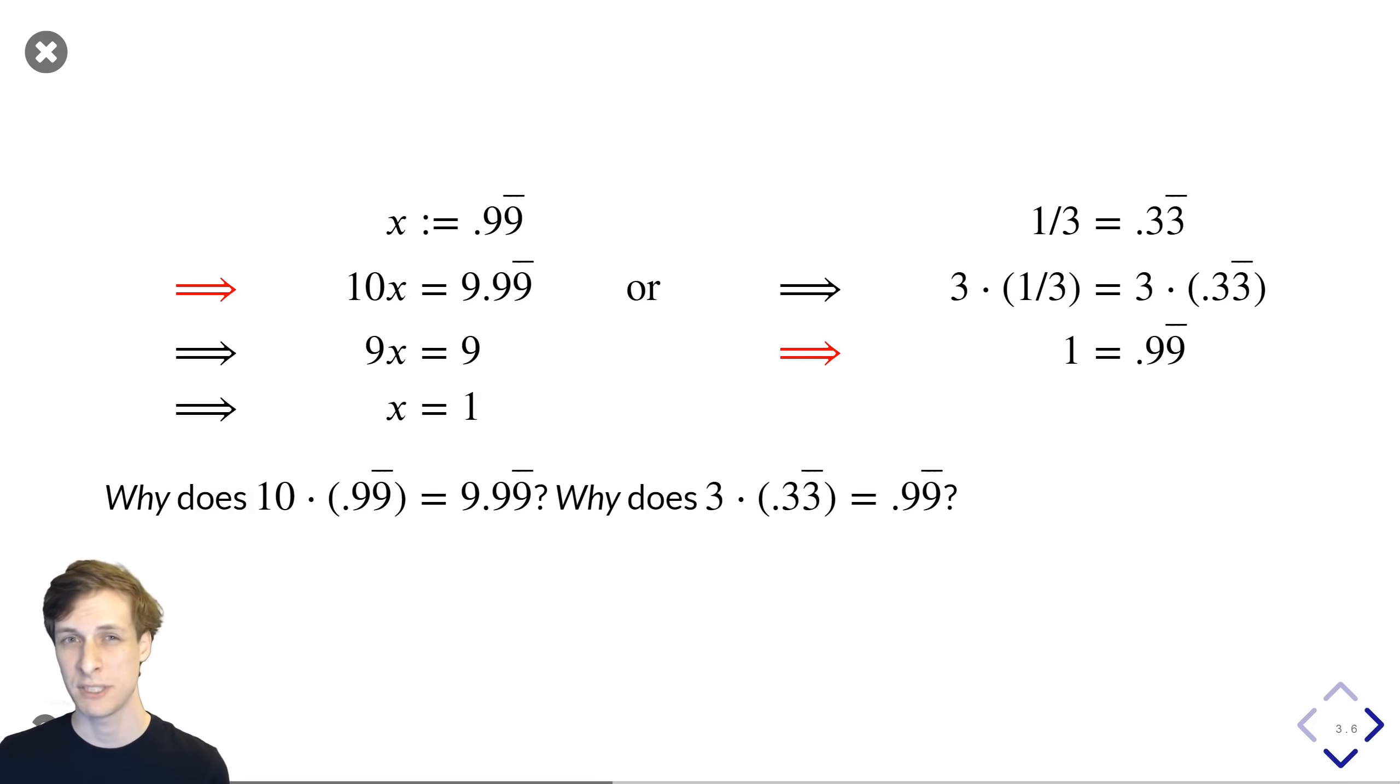If we just use that fact, I think we're kind of doing them a disservice because it doesn't really answer their question. All we've really done is hidden the details in another thing that they don't understand. The problem with the red arrow on the right is pretty similar. How do I know that multiplying 0.33 repeating times 3 actually gives 0.99 repeating?